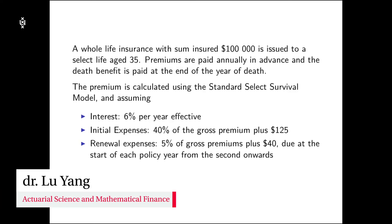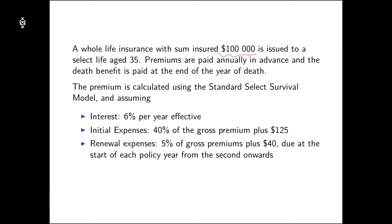In this exercise, we are given a whole life insurance with benefit $100,000 issued at age 35. The premiums are paid annually in advance and the death benefit is paid at the end of the year of death. In addition, the initial expense is 40% of the premium plus a fixed expense of $125, and the renewal expense is 5% of the gross premium plus a fixed amount of $40. This renewal expense is due at the start of each policy year starting from the second year onwards.